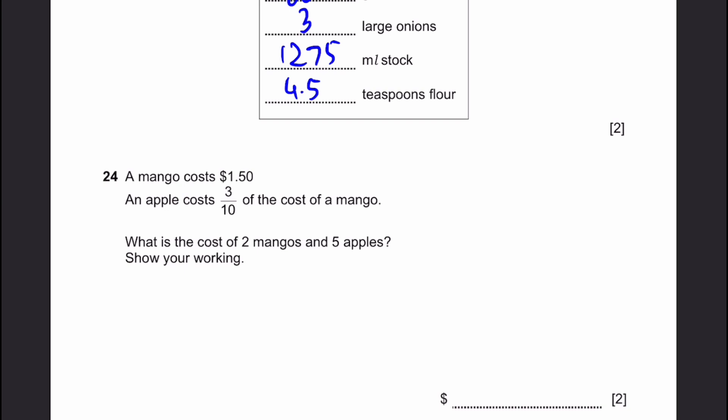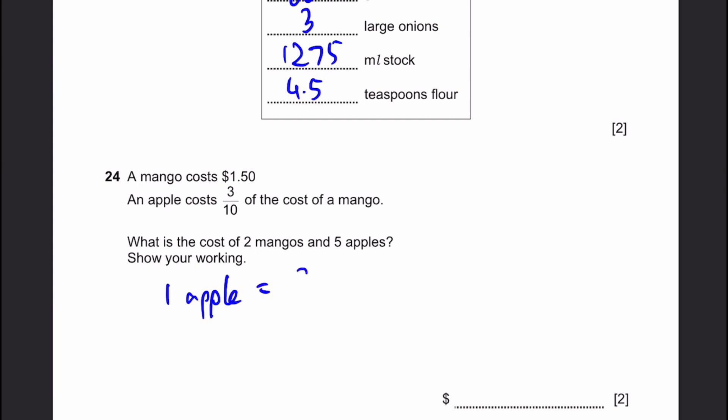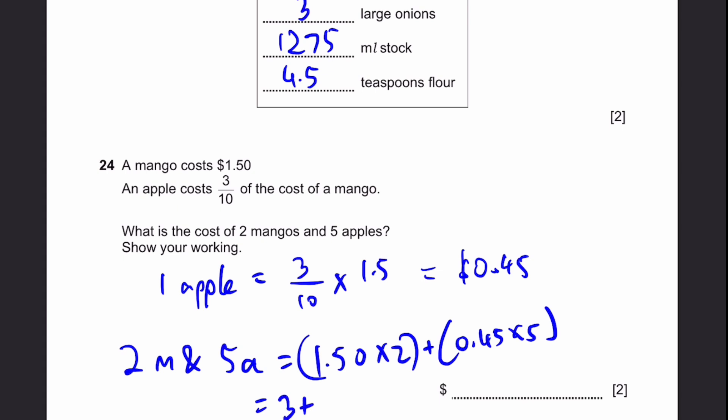Question 24. A mango costs $1.50. An apple costs 3 tenths of a mango. What's the cost of 2 mangoes and 5 apples? Show your working. So 1 apple, if you need to find the cost of apple, that'll be 3 by 10 into 1.5 because $1.50. So if we do this correctly, you'll get $0.45. Now for 2 mangoes, 2m, and 5 apples, 5a, we get 1.50 into 2 plus 0.45 into 5. That'll be equal to 3 plus 2.25, $5.25. That's the answer.